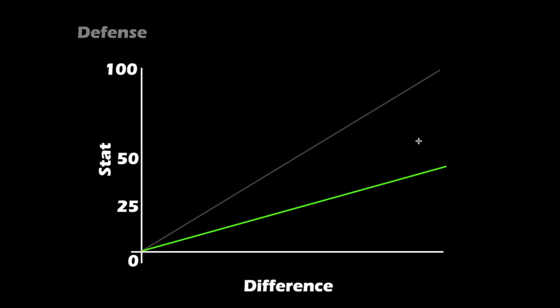Defense actually has no damage resistance — only vitality gives damage reduction. So if you have 1,000 or 2,000 defense but zero vitality, you still take full damage. For vitality: if 20% of your total stats (out of 250) are vitality — so 50 vitality — you get 10% damage reduction. The formula is: (vitality percentage of total stats) divided by half equals your damage reduction. So 100 vitality gives 50% damage reduction.